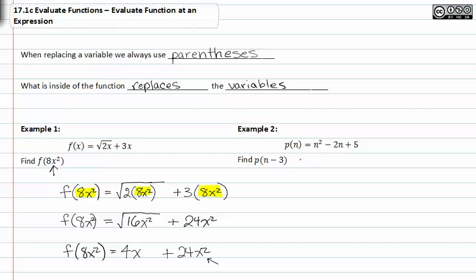If we look at example two, we're asked to put n minus three in for n. So the function p(n) is equal to n² minus 2n plus 5.